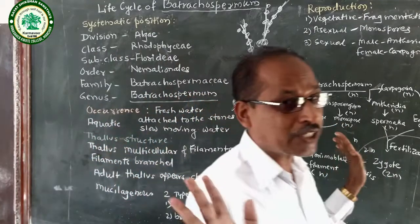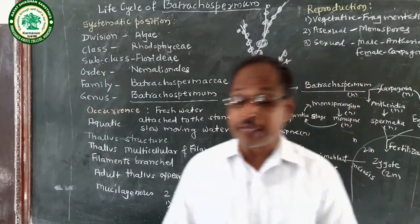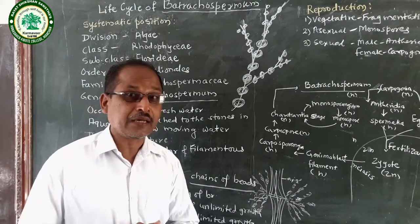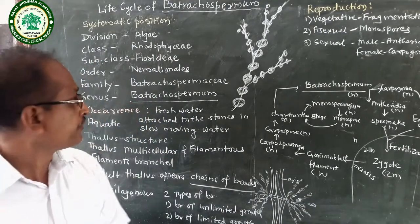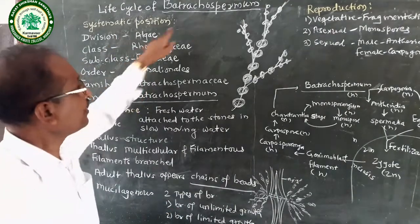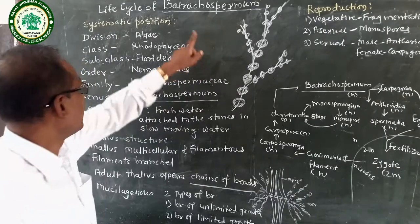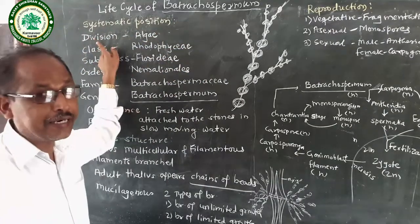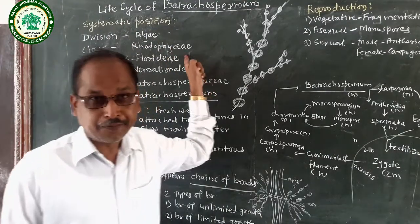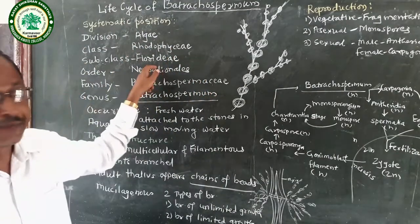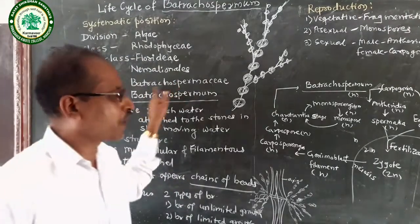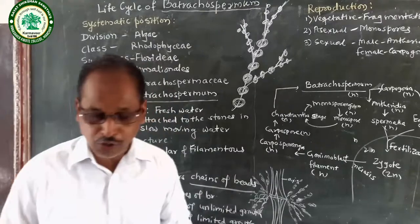Most members of Family Batrachospermaceae are found in freshwater. They are uniaxial, and the life cycle is haplobiotic. In short, Batrachospermum is included in Division Algae, Class Rhodophyceae, Subclass Florideae, Order Nemalionales, Family Batrachospermaceae, and Genus Batrachospermum.